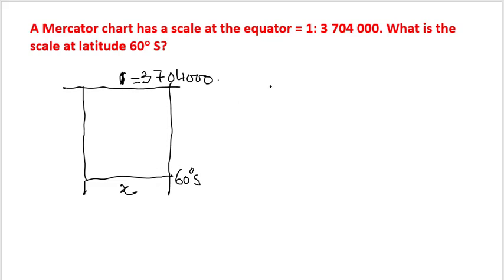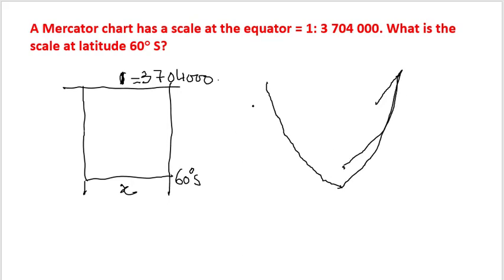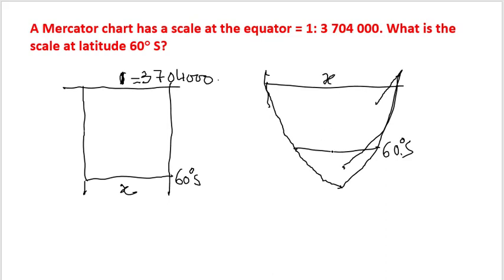We know the Mercator projection is actually depicting something like this diagram. This is the equator and let us take this as 60 degrees south. So obviously, if the equator distance is x, 60 degrees south is going to be less than x.